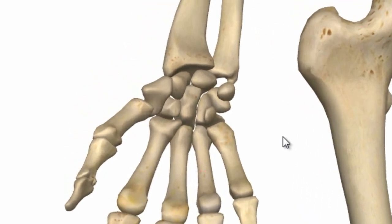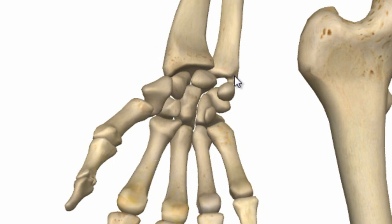The wrist joint is this joint here between the radius and an articular disc which lies at the end of the ulna and attaches to the base of the styloid process. It's between the radius and an articular disc at the end of the ulna, and between the proximal articular surfaces of three carpal bones: the scaphoid, lunate, and triquetral bones.